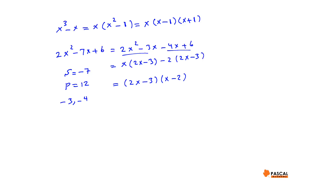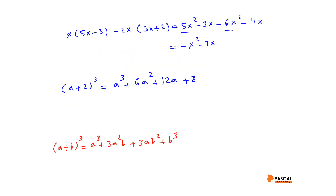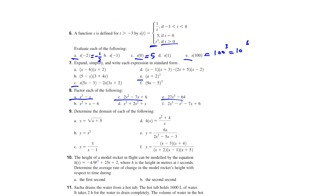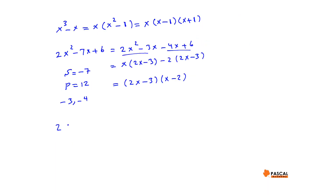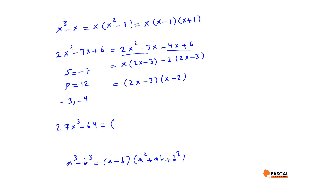Part E: 27x³ minus 64. It is a difference of cubes. Using the identity a³ minus b³ equals (a minus b)(a² plus ab plus b²), we identify 3x as a and 4 as b, since (3x)³ equals 27x³ and 4³ equals 64. Therefore 27x³ minus 64 equals (3x minus 4)(9x² plus 12x plus 16).